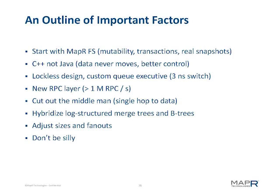We also cut out the middleman. In HBase, the client talks to HBase, which talks to HDFS, which talks to the file system. In MapR, the client talks to the file system directly, which has control of the disks — so there are network hops, communication hops, and serialization steps that are avoided. We hybridize the basic log-structured merge tree with B-trees that we have natively in the file system. That allows us to use mutation operations on the file system at the small scale to get substantial benefits.